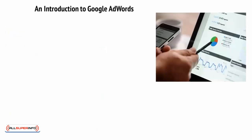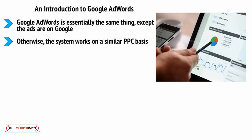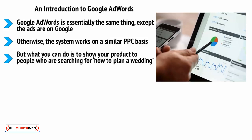An introduction to Google AdWords. Google AdWords is essentially the same thing, except the ads are on Google. This time, you are paying for ads to appear at the top of certain search results under the heading Sponsored Results, and the system works on a similar PPC basis. The difference is that you can't as precisely target the type of person looking for your product — for example, you can't choose to show it only to engaged women. But you can show your product to people who are searching for how to plan a wedding, which has the benefit of being targeted while also being well-timed, as your audience is actively looking for that information.